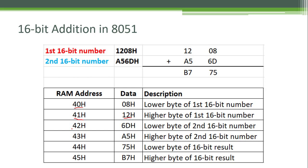Similarly, the second 16-bit number A56Dh is stored on memory locations 42h and 43h. On 42h, the lower byte will be stored and on 43h, the higher byte will be stored.